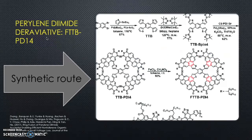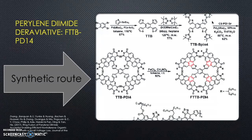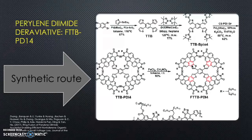The perylene diimide derivative FTTBPD14 is shown here along with its synthetic route. This non-fullerene acceptor molecule was shown to have the lowest voltage loss of any perylene diimide derivative, along with the highest power conversion efficiency at 10.6% in bulk heterojunction cells. This also showcases the significance of ring fusion in these acceptor molecules, and more specifically the favorable energy levels you receive from ring fusion.